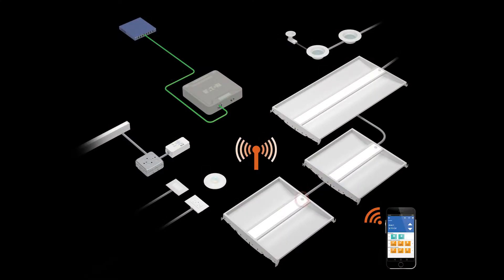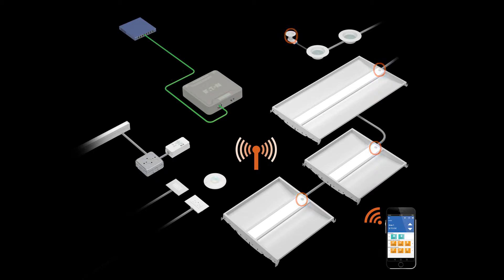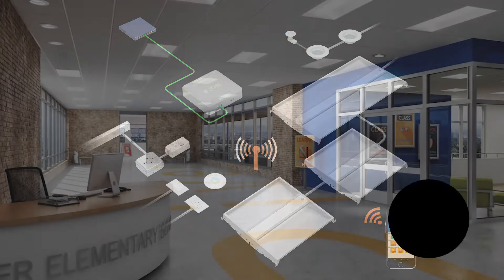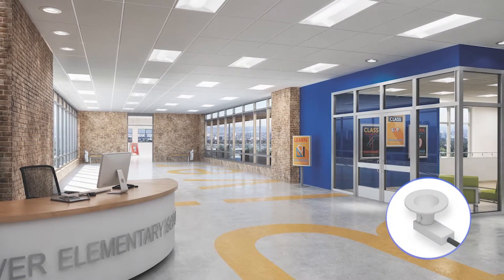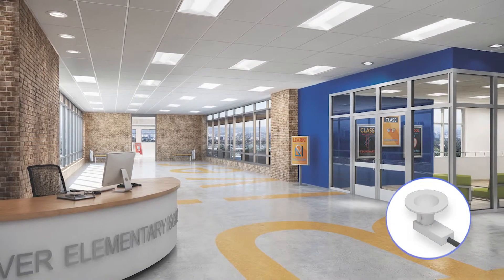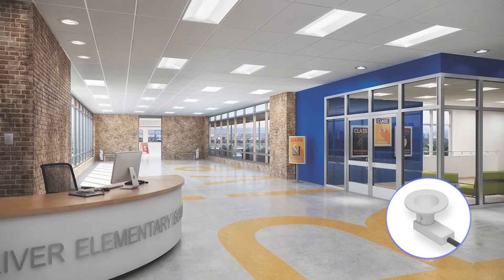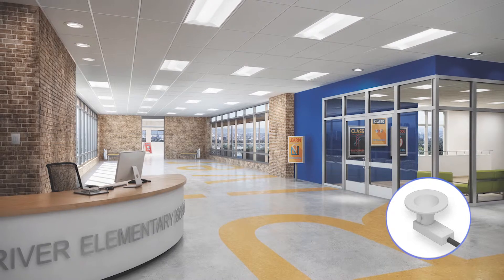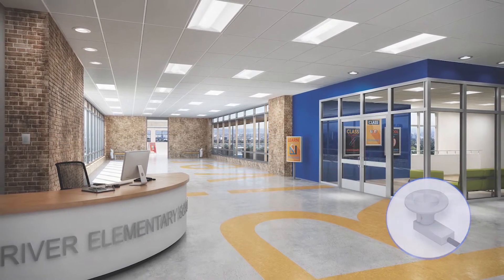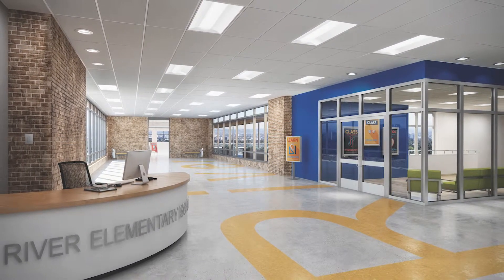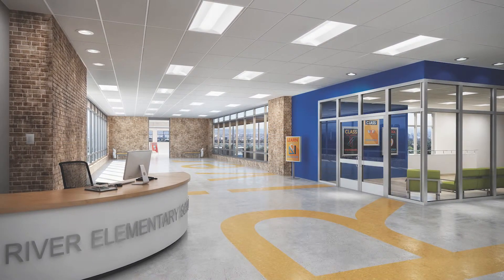Fixtures containing integrated sensors or connected to tile-mount sensors will automatically respond to available daylight. The sensor will reduce or increase the light level of the connected fixture to maintain a 500 lux target using closed-loop daylight control. All other commands will be scaled within the reduced daylight range to maximize energy savings.